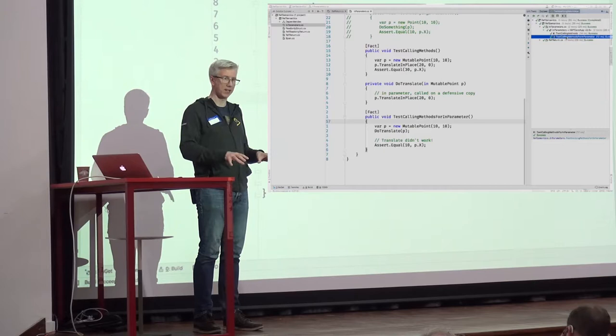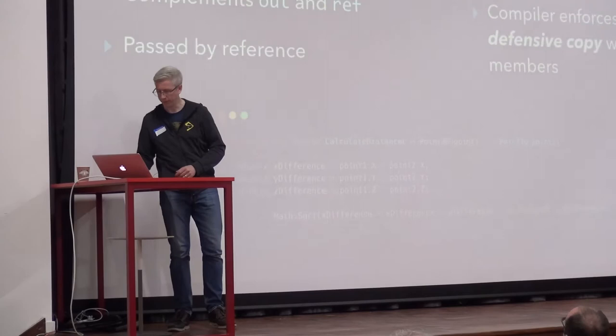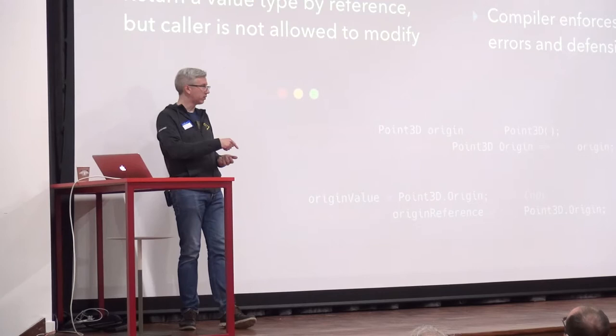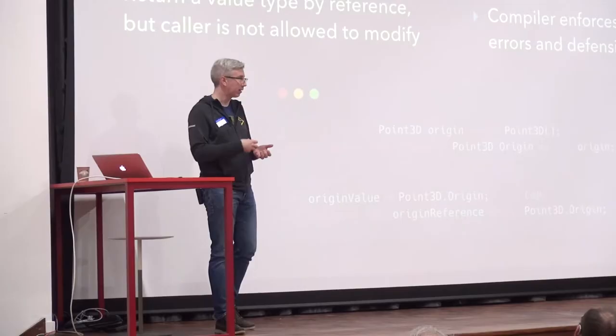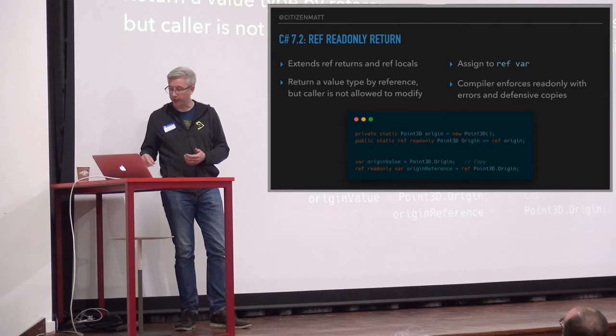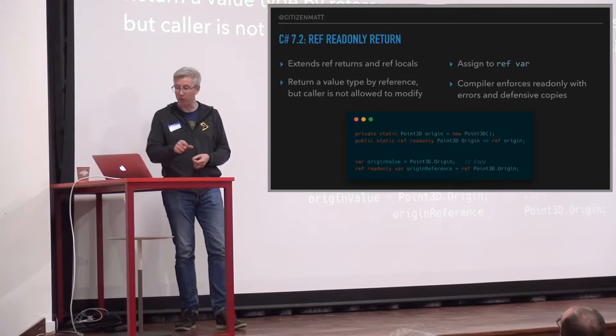So what can we do about that? We've got another feature: `ref readonly`. This is another modifier that extends ref returns and ref locals. It's about returning a value type as a reference but saying the receiver cannot modify it — again, it's about passing things around by reference for performance, but don't change it. The way this works is you add the `readonly` keyword to your method's ref return signature. You assign to a `ref var`, but the reference is read-only.